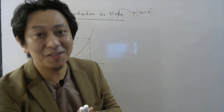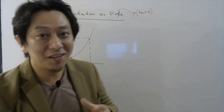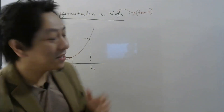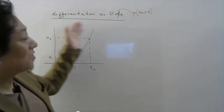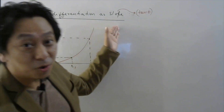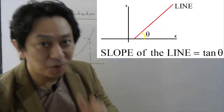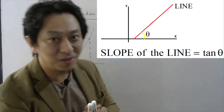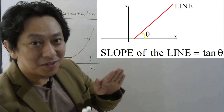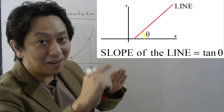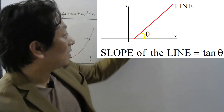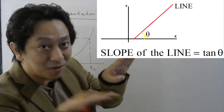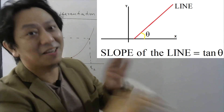There is another interesting way of seeing differentiation, and that is differentiation as slope of a line. Slope of a line, if you remember from your school days, represents the tan of the angle made by the line with the positive x-axis.